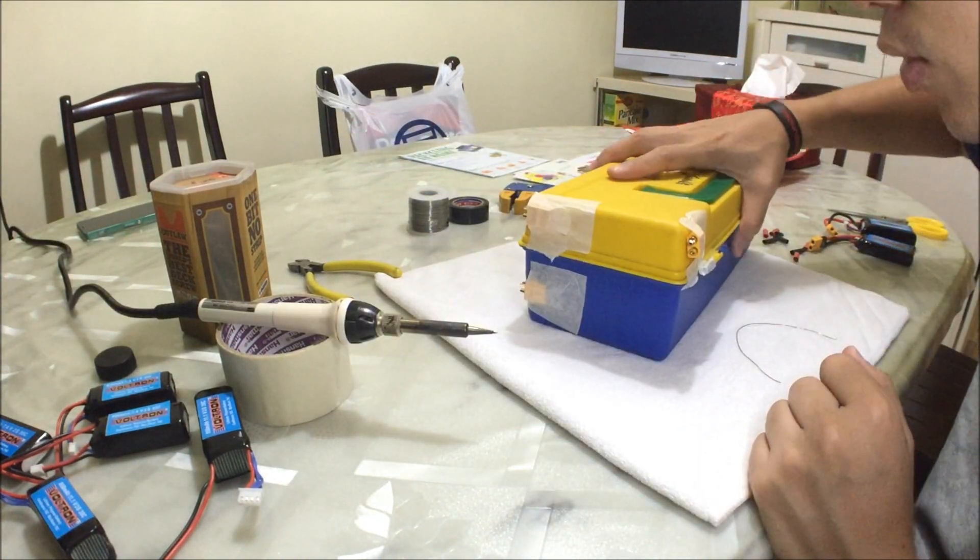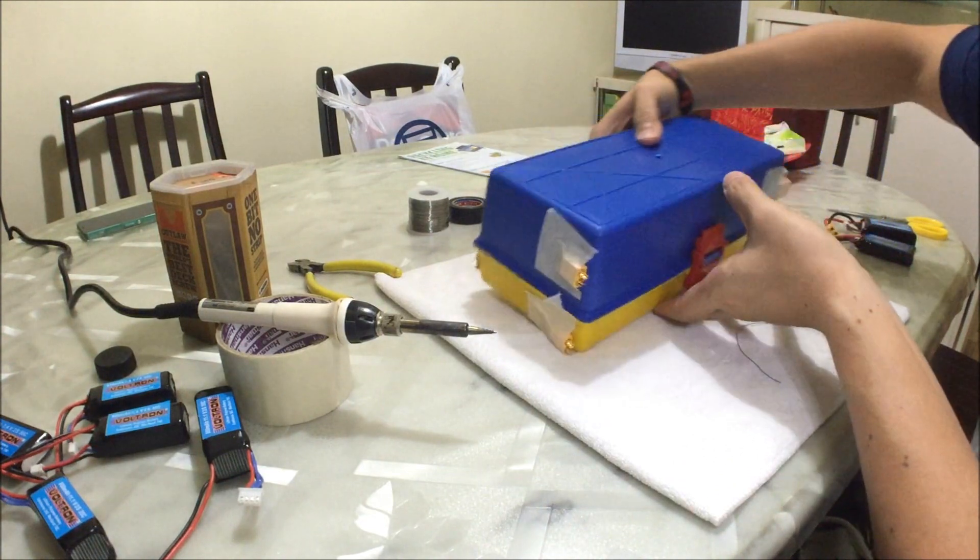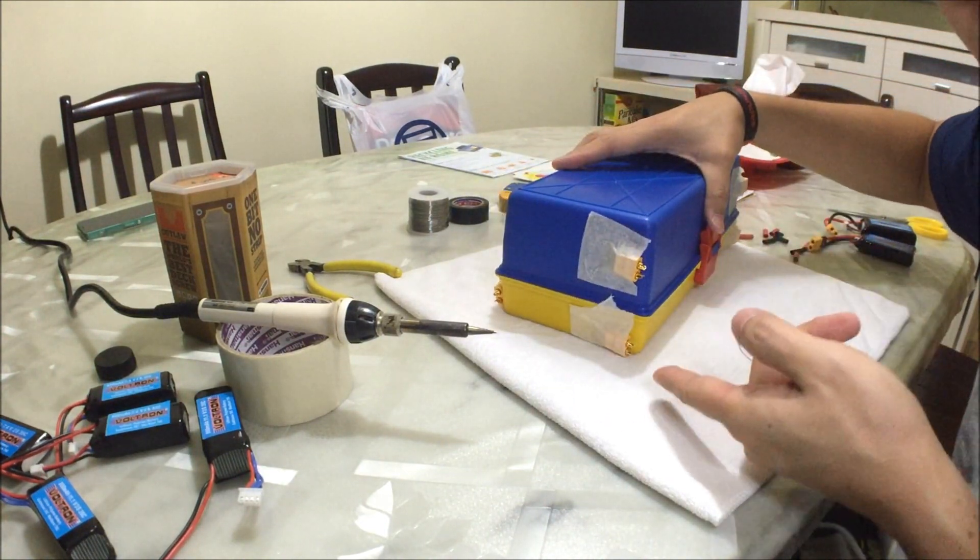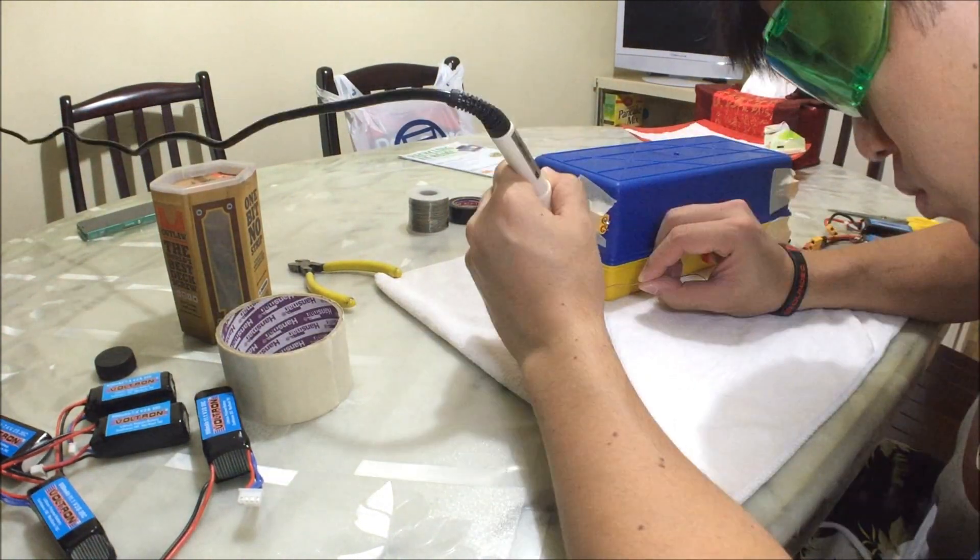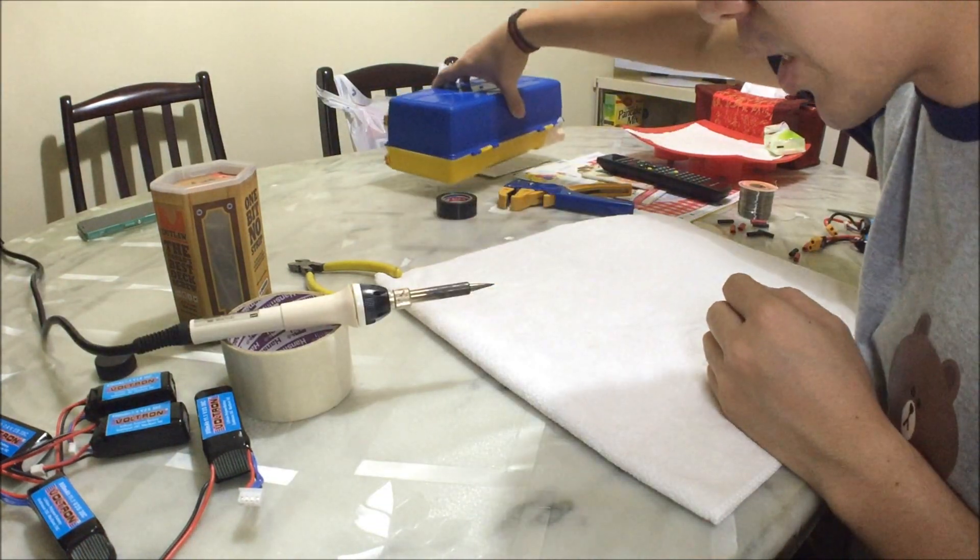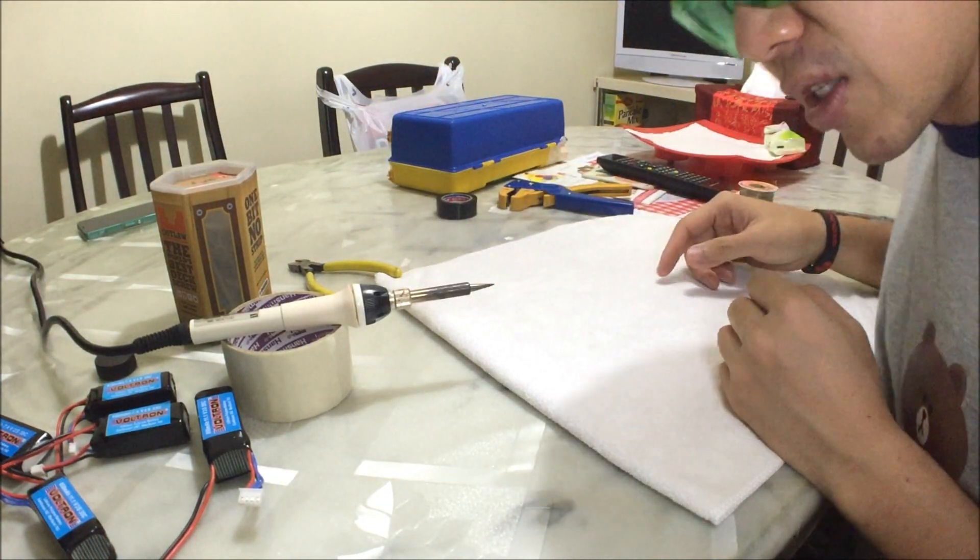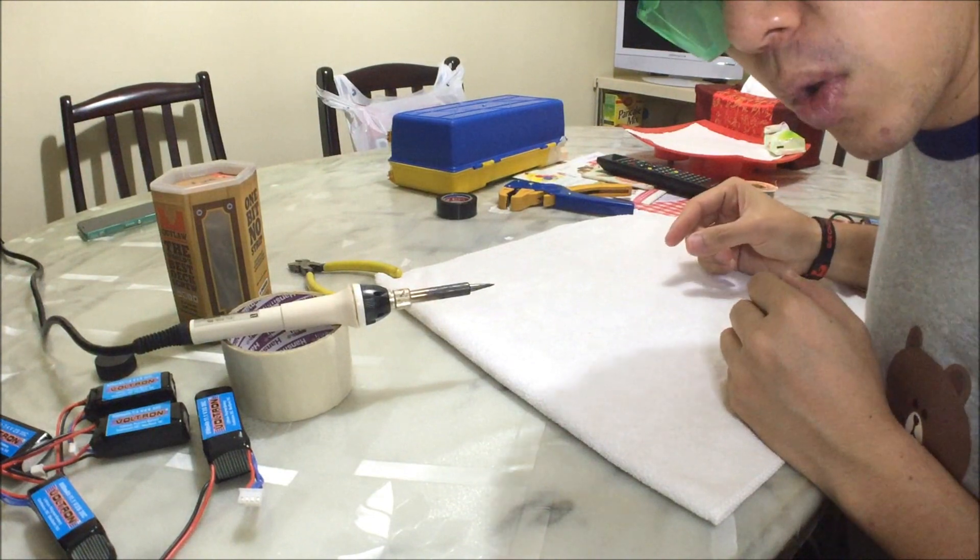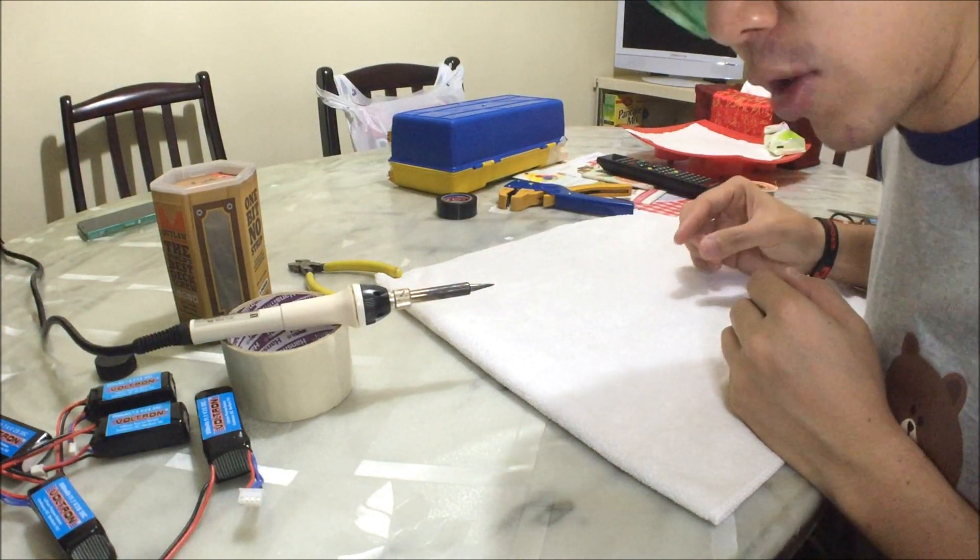Once you're done adding flux to one side, all you have to do is just flip it over and then add flux to the other side. It's that simple. When you're done, you're going to just put this aside and let it cool down because the XT60 connectors actually heat up quite fast and they stay hot quite long.